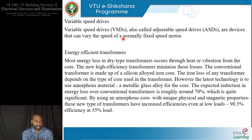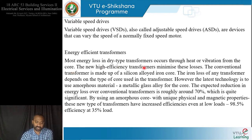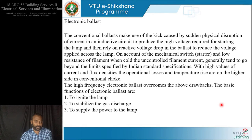Energy efficient transformers address losses that occur mainly through heat and vibration from the core in conventional drive-type transformers. New high-efficiency transformers minimize these losses by replacing the silicon-alloyed iron core with an amorphous material — a metallic glass alloy. This results in increased efficiencies even at low loads, with efficiencies as high as 98.5% even at just 35% load.